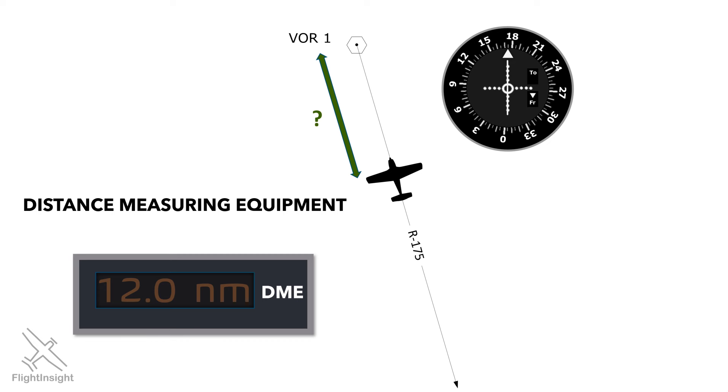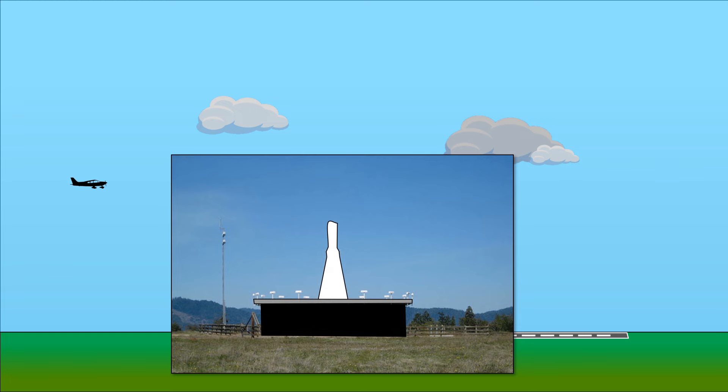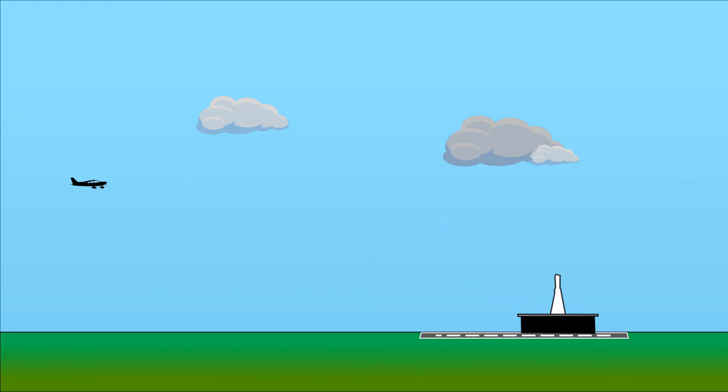DME transmitters are located on VOR stations and other nav aides, and their frequencies are paired so our equipment automatically picks up both signals. A VOR like this one will be paired with a DME transmitter and could be placed on the field at an airport.